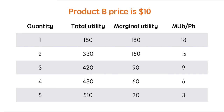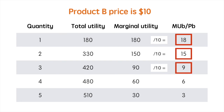As we did before, we must do again. To calculate the marginal utility per dollar for our first unit, we divide 180 utils by the price of $10, resulting in 18 utils per dollar. The second gives us 15 utils per dollar, the third 9, the fourth 6, and the fifth and final unit provides 3 utils.